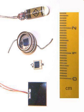A traditional solar cell is just a large area photodiode. For optimum power output, the photovoltaic cell will be operated at a voltage that causes only a small forward current compared to the photocurrent. In photoconductive mode, the diode is reverse biased, with the cathode driven positive with respect to the anode. This reduces the response time because the additional reverse bias increases the width of the depletion layer, which decreases the junction's capacitance. The reverse bias also reduces the dark current without much change in the photocurrent. Although this mode is faster, the photoconductive mode can exhibit more electronic noise due to dark current or avalanche effects.